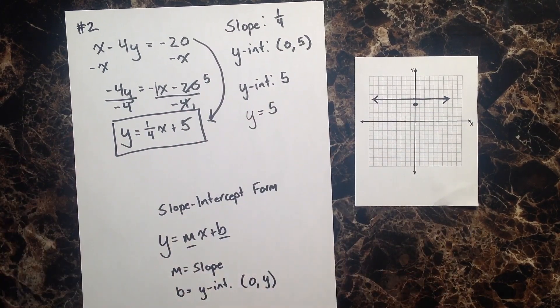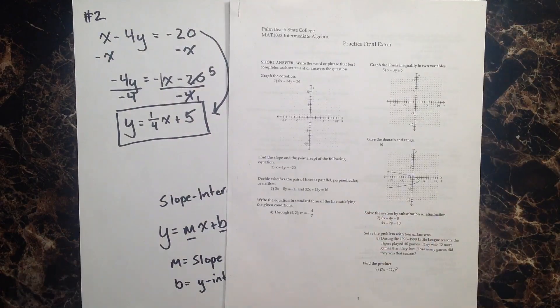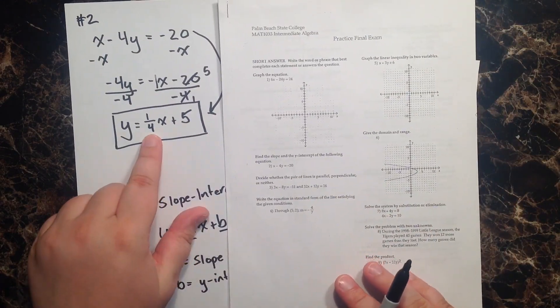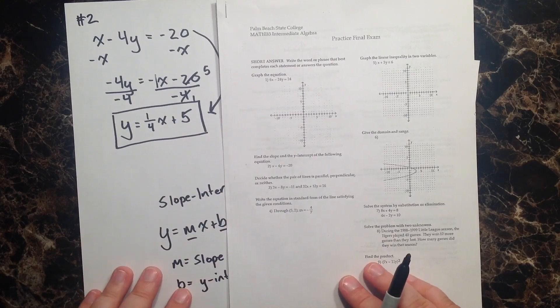But at any rate, this is question number two. When they ask us for our slope and our y-intercept, our slope is 1 over 4, and our y-intercept is 0 comma 5.